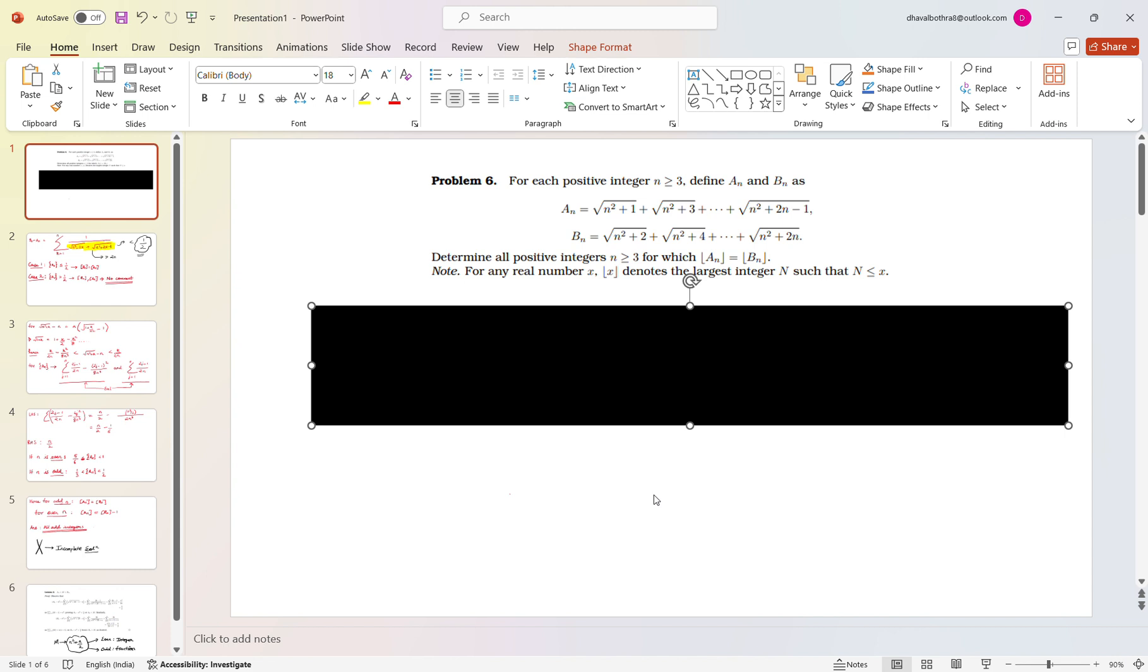Now we are asked what's the condition on n such that the GCD of both the terms a_n and b_n are equal. Now we can easily observe that a_n and b_n both will be greater than n, and then people get stuck.